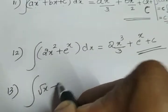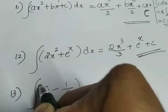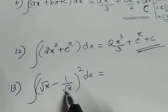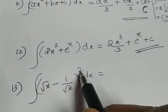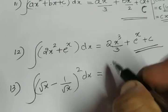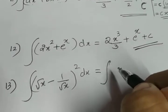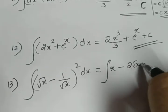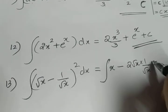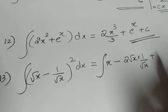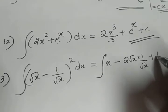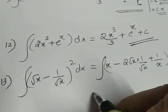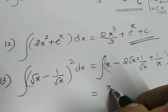Next question: integral of (√x - 1/√x)² dx. We can solve this by applying the (a - b)² formula. Expanding: a² is (√x)² = x, minus 2ab = 2 × √x × 1/√x, plus b² = (1/√x)² = 1/x. So the integrand becomes x - 2 + 1/x.